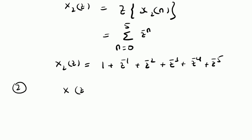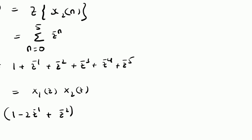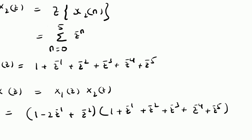In step two, we find the product of these two Z-transforms. X(z) = X1(z) × X2(z), which equals (1 - 2z^(-1) + z^(-2)) multiplied by (1 + z^(-1) + z^(-2) + z^(-3) + z^(-4) + z^(-5)). We now need to find the product of these two polynomials.